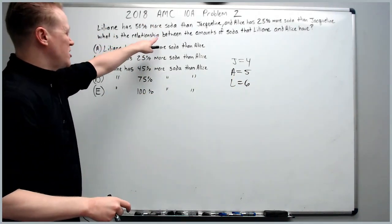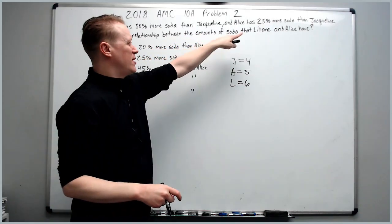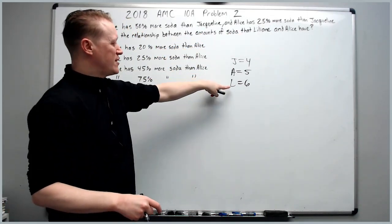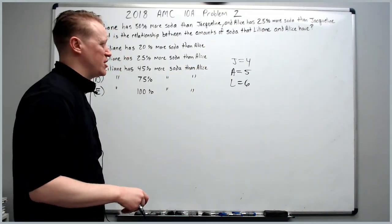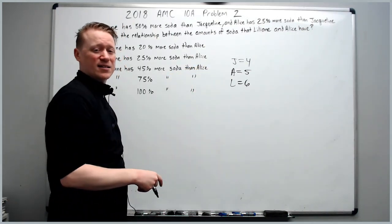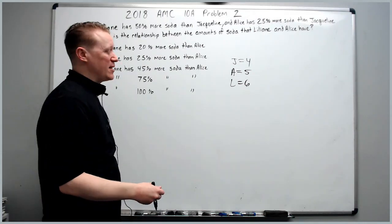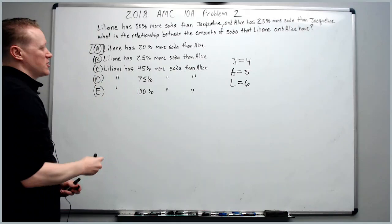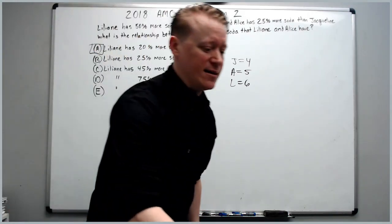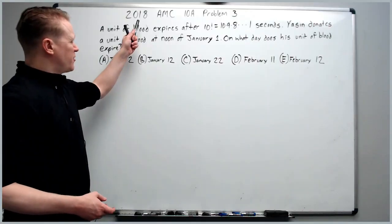What is the relationship between the amounts of soda that Lillianne and Alice have? So as you can see, Lillianne has one more soda than Alice, which is one fifth of Alice's soda. One fifth is equivalent to 20%. So Lillianne has 20% more soda than Alice. Continuing on to problem number three from the 2018 AMC 10A.